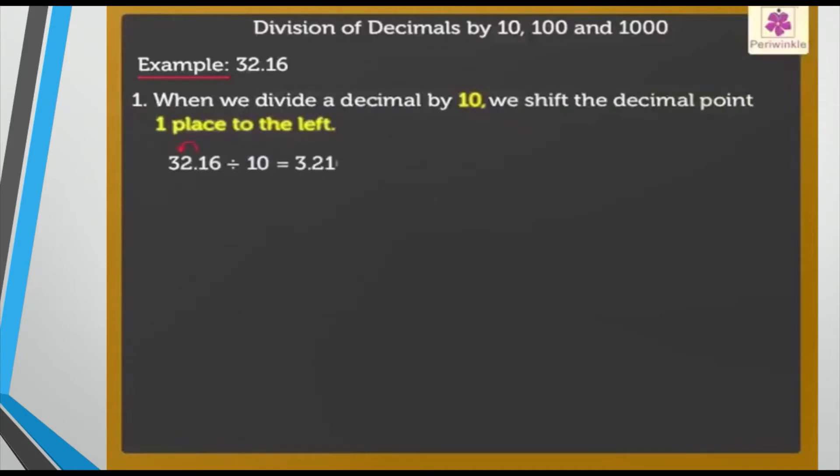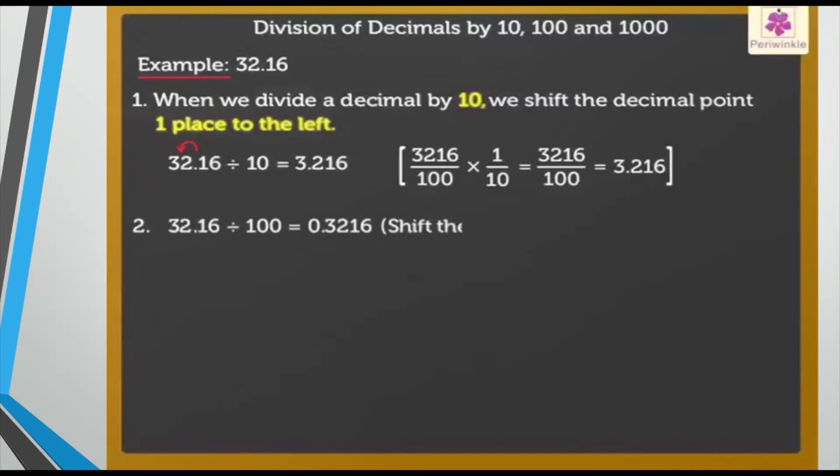So it will be 3.216. Or remember, you can use this method: if you simply remove the decimal and divide by ten, the answer will be the same. Now, 32.16 divided by 100. Hundred has got two zeros, so I will shift the decimal two places to the left.